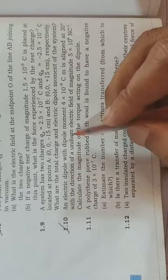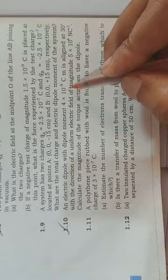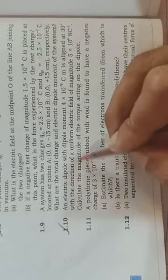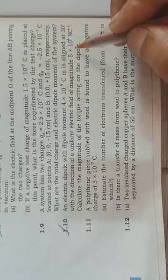Now we take this question 1.10: an electric dipole with dipole moment 4 into 10 to the power minus 9 coulomb meter, theta angle 30 degrees is aligned at 30 degrees with the direction of the electric field 5 into 10 to the power 4 newton per coulomb.